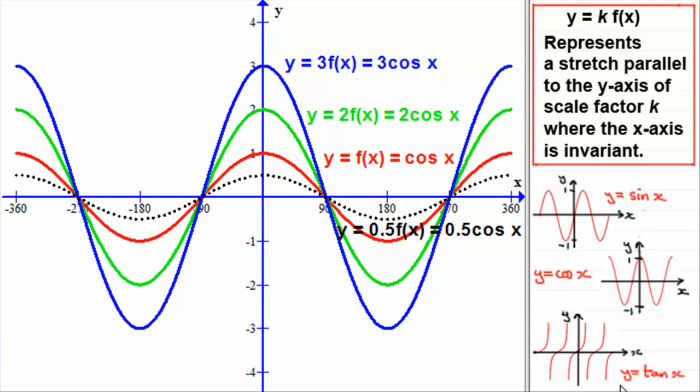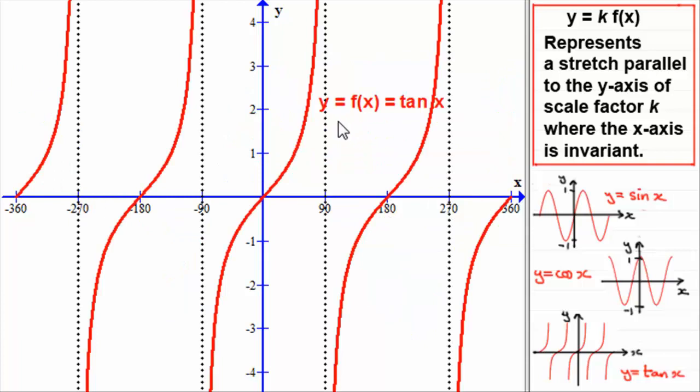Let's do the same now for the graph of y equals tan x and give you a few to sketch there. So what we've got here is y equals f of x, which equals tan x, f of x being tan x. What I'd like you to try is to sketch the graph of 2 tan x and a half tan x. Just pause the video and come back and we'll run through these ones.